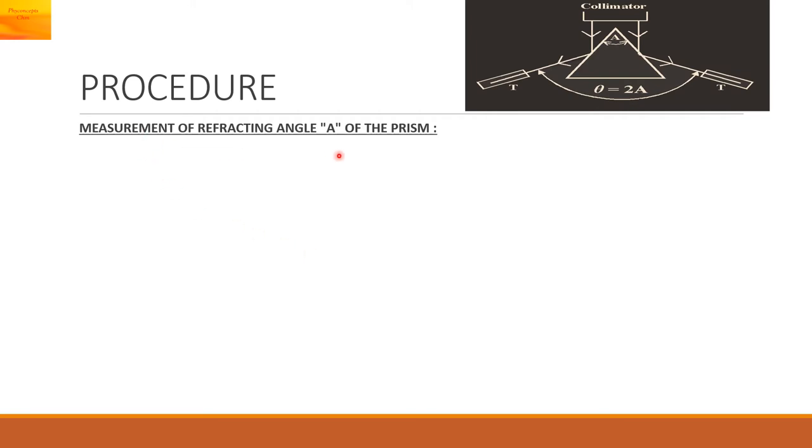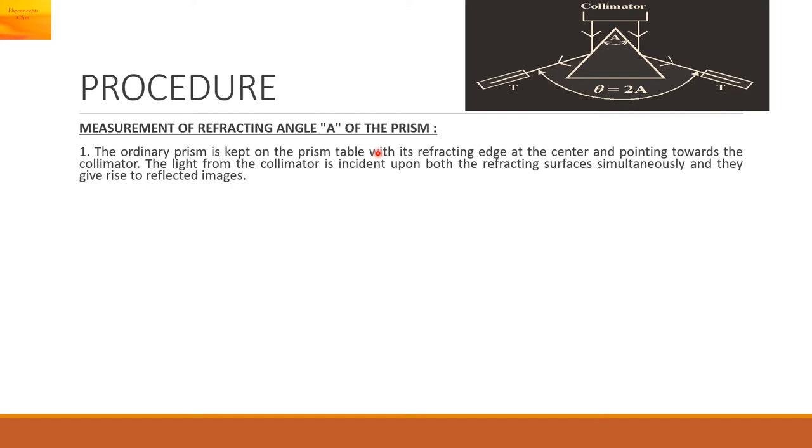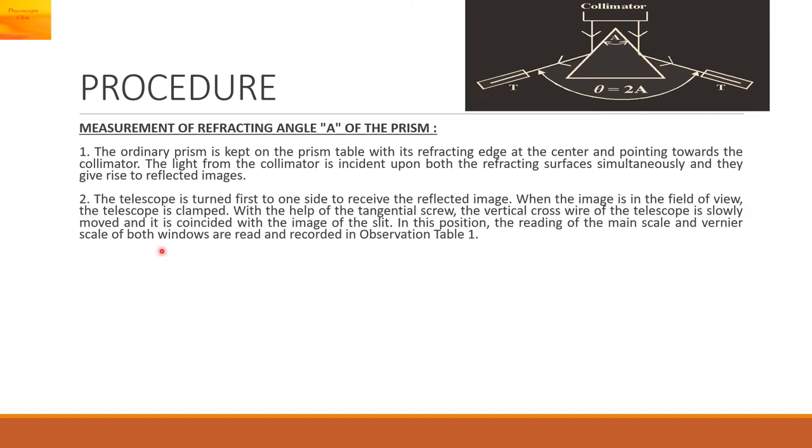Procedure: Measurement of refractive angle A of the prism. The ordinary prism is kept on the prism table with its refracting edge at the center and pointing towards the collimator. That is shown in the diagram. The light from the collimator is incident upon both the refracting surfaces simultaneously. These are the refracting surfaces. And they give rise to reflected images which you can see through the telescope from both the sides. The telescope is turned first to one side to receive the reflected image.